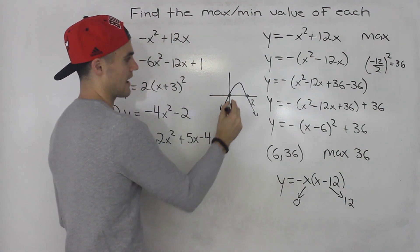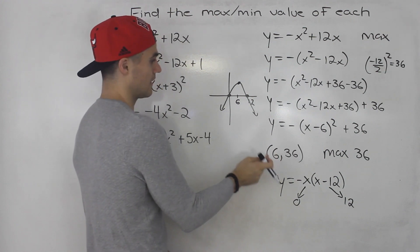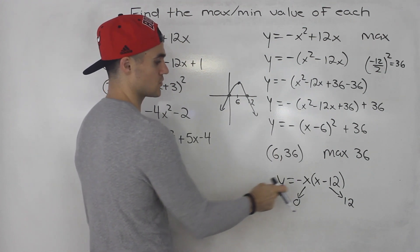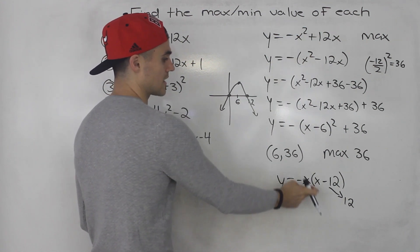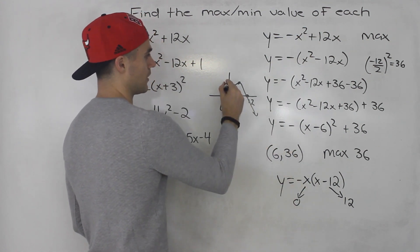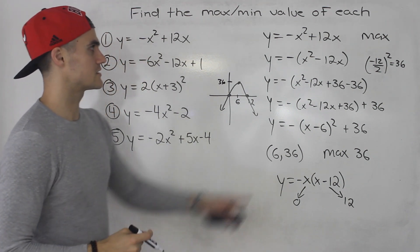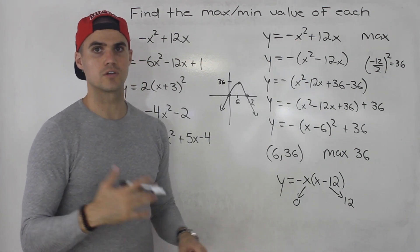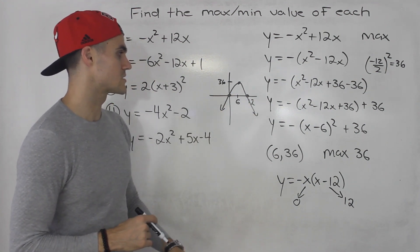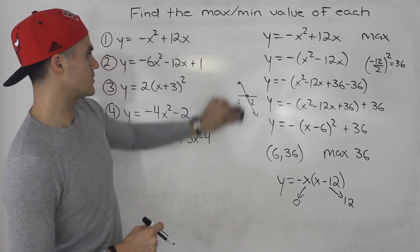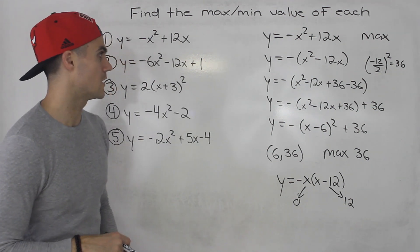The x value of the vertex is going to be the midpoint — so six, which is what we got. Then you plug in six into the function and you get positive 36. A lot of times it won't factor that smoothly; you could use the quadratic formula and sometimes get decimal intercepts. But I'm going to focus more on completing the square in this video.